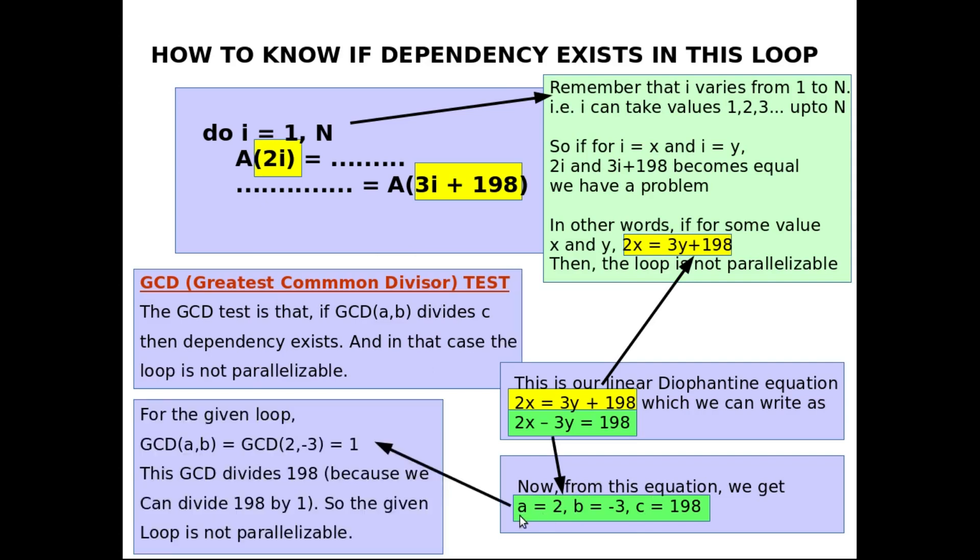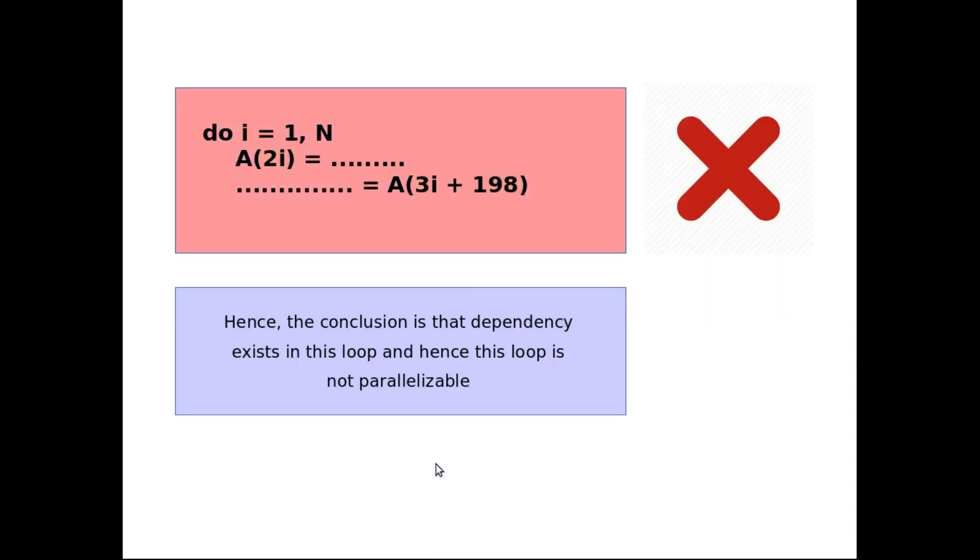In this given example, GCD of a is equal to 2 and b is equal to minus 3 is 1. And now we are interested whether this 1 divides c. c is 198. And we can easily see that 1 divides 198. And since 1 divides 198, dependency exists and this loop is not parallelizable.